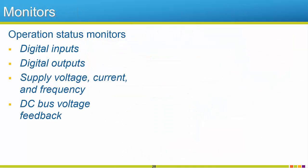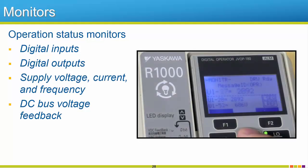The R1000 features a monitor menu. This menu contains a wealth of monitors to make operation and troubleshooting easy. There are a number of basic operation status monitors, which include input and output terminal status. Since the R1000 is a regenerative unit, there are many critical monitors for power supply voltage, current, and frequency levels. Also, DC bus voltage feedback can be monitored.